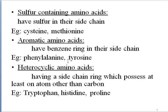Some amino acids have a benzene ring in their side chain. Examples include phenylalanine and tyrosine. Some amino acids contain a heterocyclic compound. Examples are tryptophan, histidine, and proline.